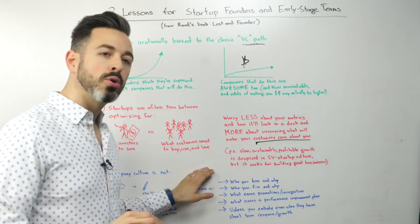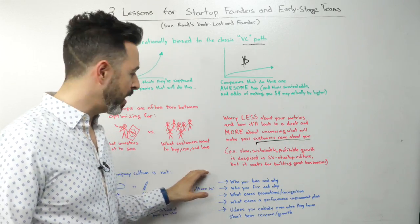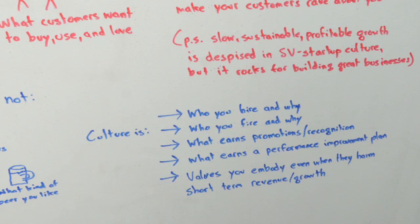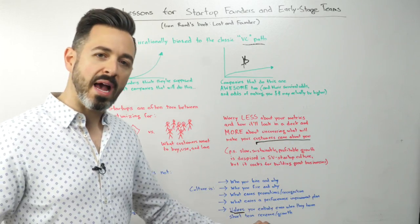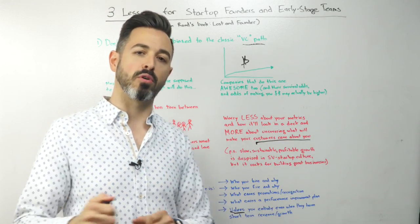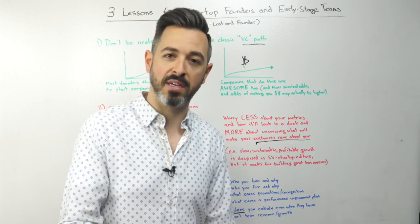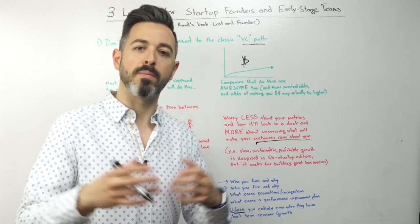Company culture is who you hire and why you hire them. It is who you fire, who you let go, and why you do that. It is what earns you promotions, what earns you recognition — what does the CEO stand up and say was great work from someone on the team — versus what earns you a performance improvement plan. Company culture embodies values that you are willing to sacrifice money and growth for. Most of us, for example, are unwilling to do illegal things in order to accelerate growth or make more money.